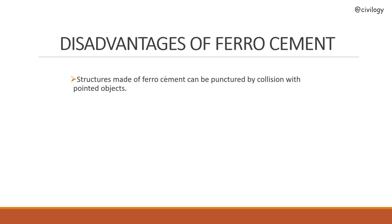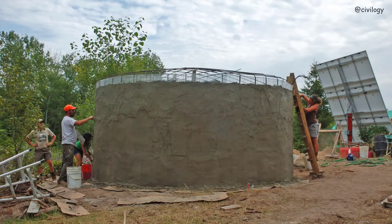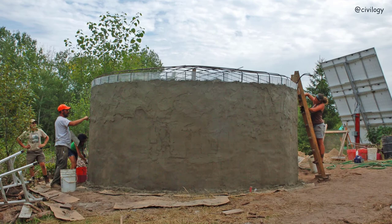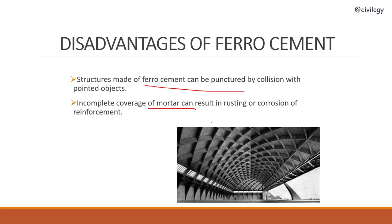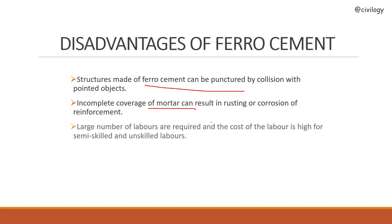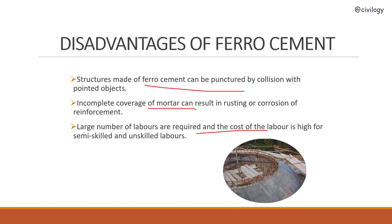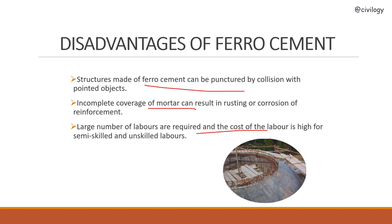Disadvantages of ferrocement: structures made of ferrocement can be punctured by collision with pointed objects — sharp objects colliding perpendicular to the surface. Incomplete coverage of mortar can result in rusting or corrosion of reinforcement; if reinforcement is exposed to the environment, the structure may collapse. A large number of laborers are required and the cost of labor is high for semi-skilled and unskilled workers. Tying rods and mesh together is very tedious and time consuming.